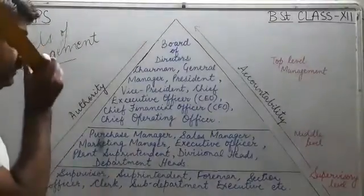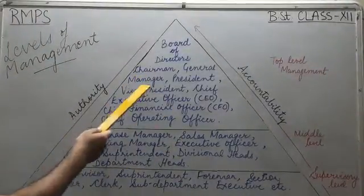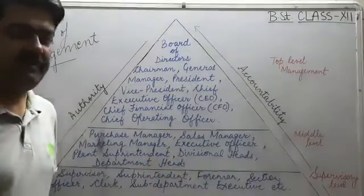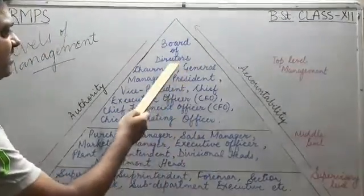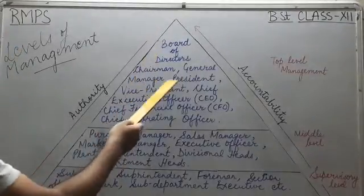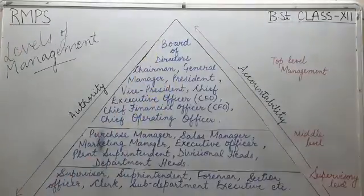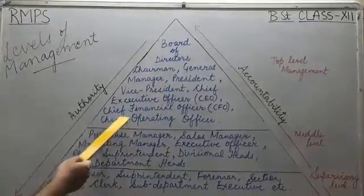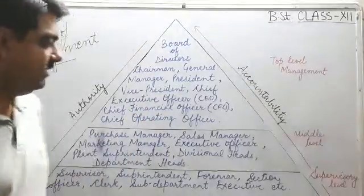Now these are a few designations of top level management. Top level managers are known as board of directors, chairman, general managers, president, vice president, chief executive officers, chief financial officers, and chief operating officers.